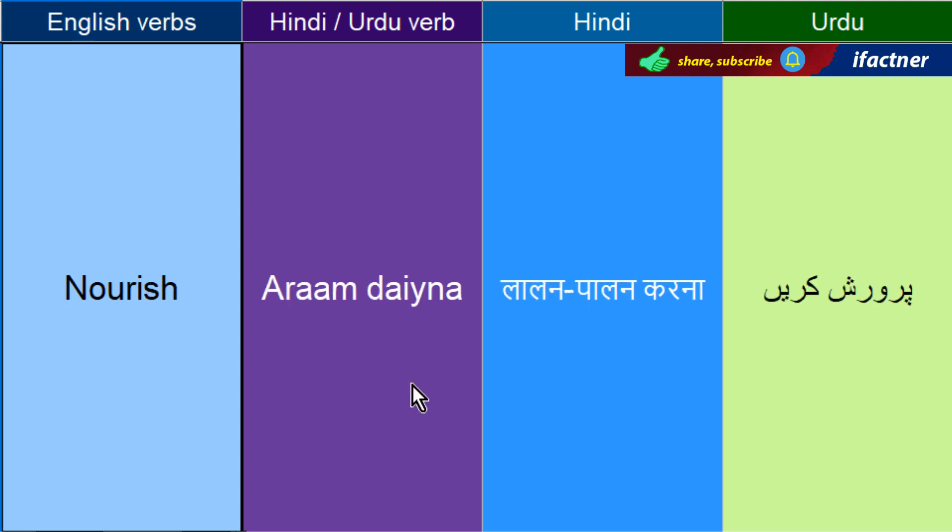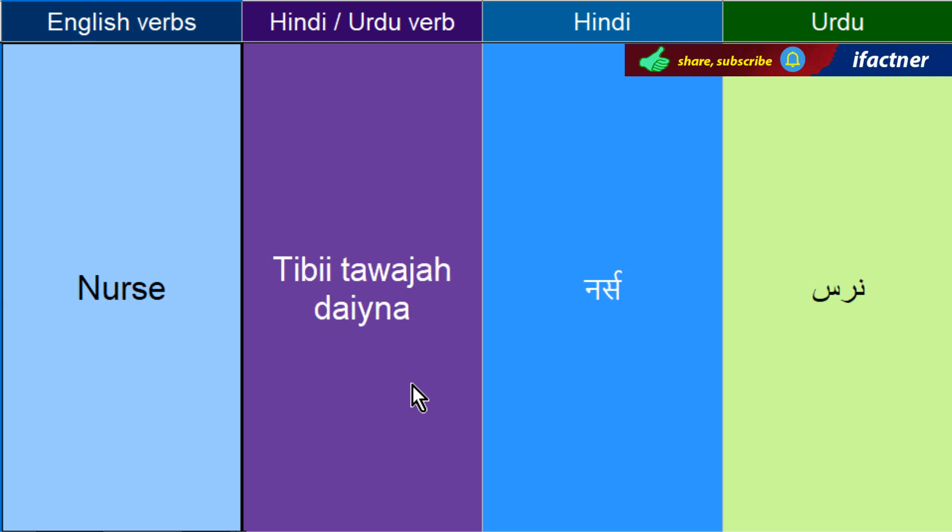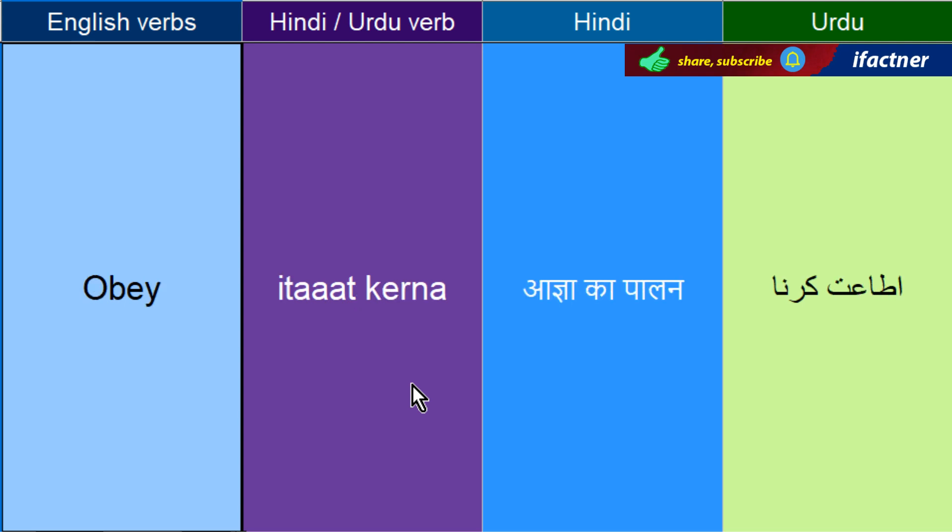Aaraam dayna ya pher perwarish kerne ko kehete hai — Nourish. Tibi tawajjh dayne ko kehete hai — Nurse. Iskelawa doodh pulaanay ko bhi Nurse kehete hai. The mother is nursing her baby — maa apne bache ko doodh pula rie hai. Itaat kerne ko kehengay — Obey.